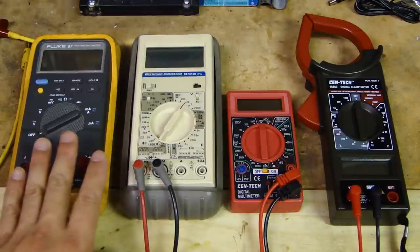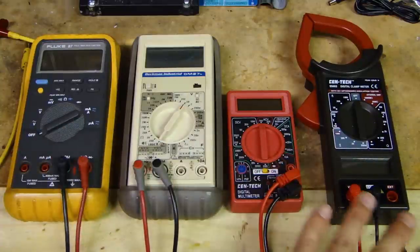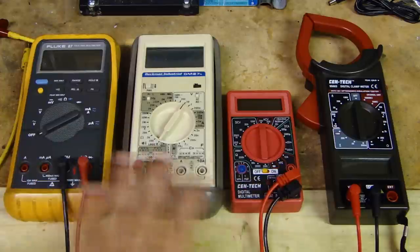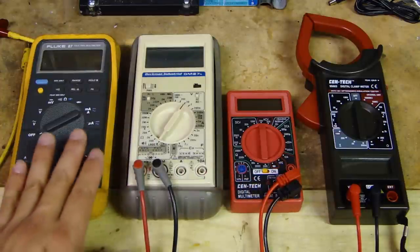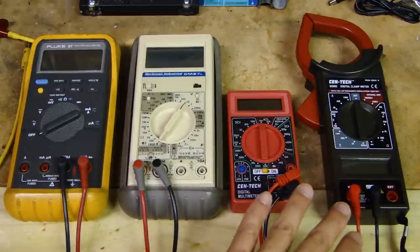Now in front of me, I have four different type of multimeters. They're made by different companies. But basically, they all do the same thing. The price do range. But once you learn how to use one of these, then you'll be able to use it on the other brand or different make.